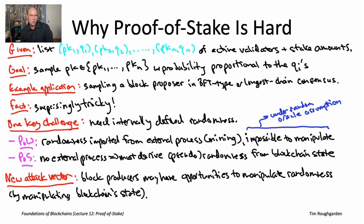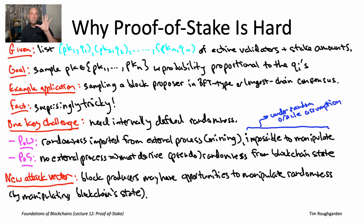The intuition behind this challenge: proof of stake has no obvious external random process, we're not willing to trust some third party to supply randomness, and the protocol must generate randomness itself from what it knows — its own blockchain state. But if randomness is derived from blockchain state, you worry about manipulation through block producers. This is the natural place to conclude Part 1, because all of the Part 2 videos are exactly about understanding and addressing this challenge: how do you generate randomness so that manipulation probabilities are few to none for the block producers participating in the protocol.